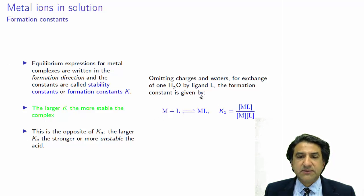Here is a particular reaction: metal plus ligand gives you ML. And here's the equilibrium constant. Well, this equilibrium constant is called the formation constant or stability constant. It's just an equilibrium expression.